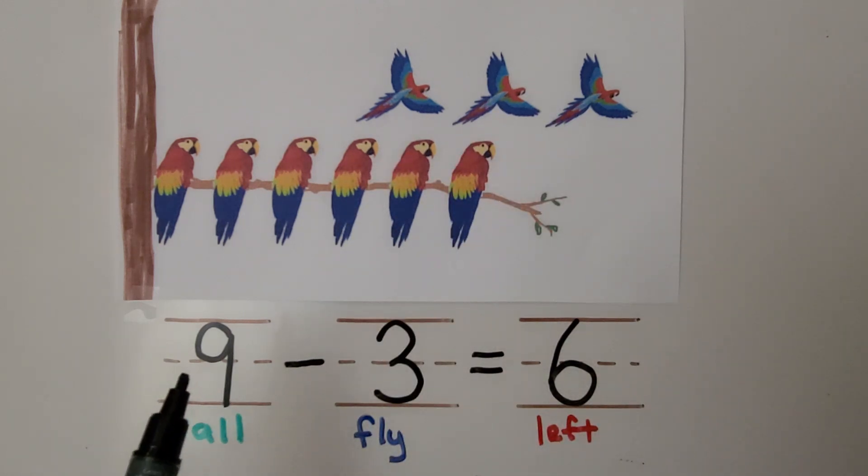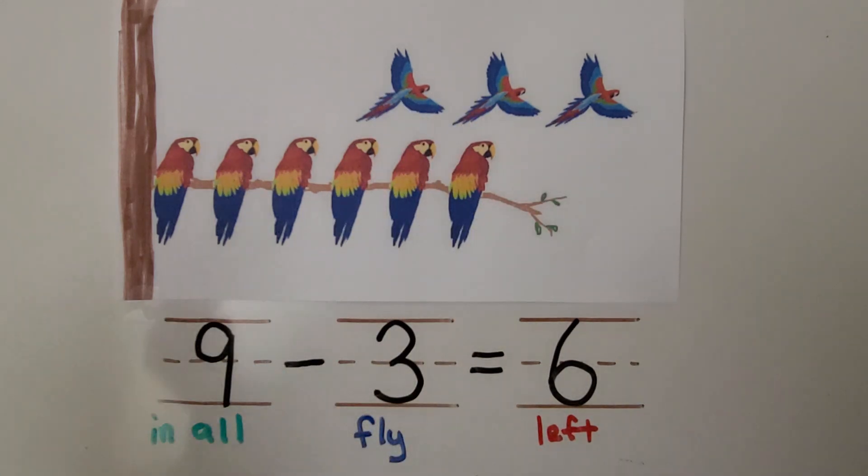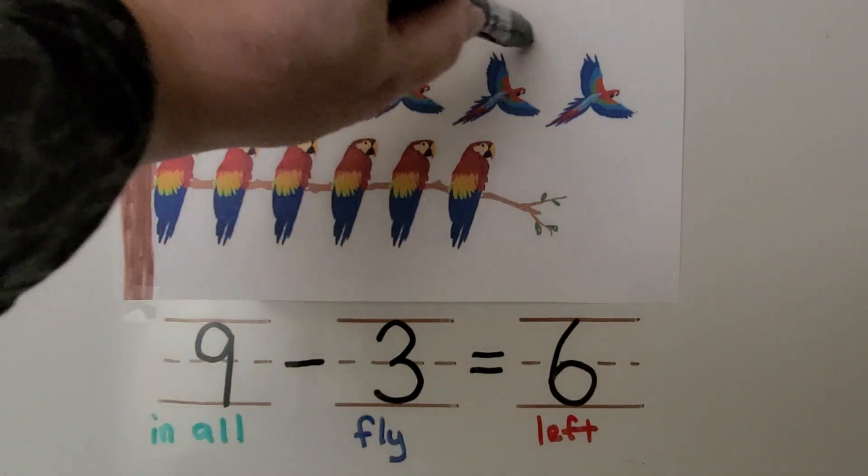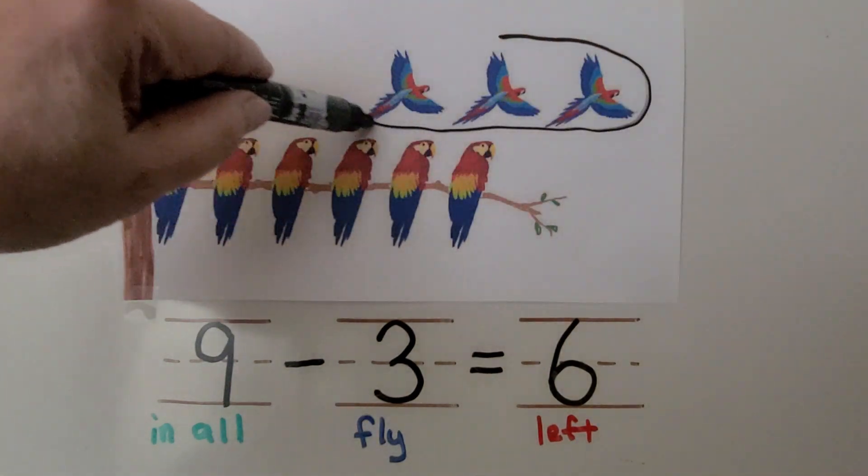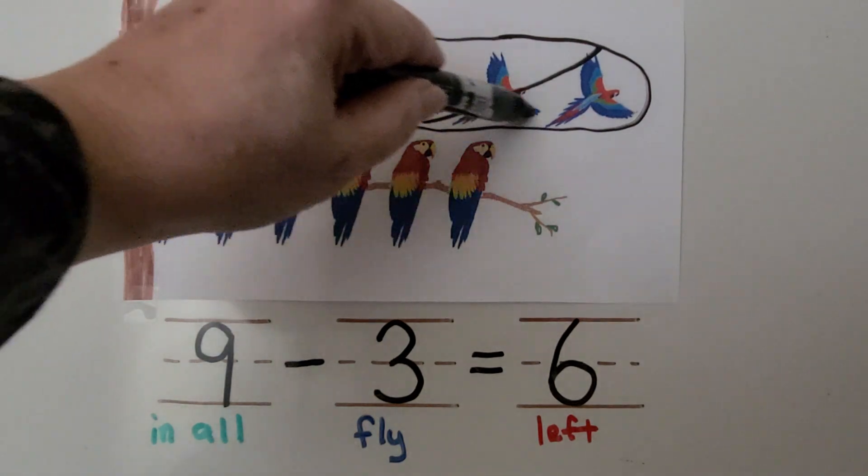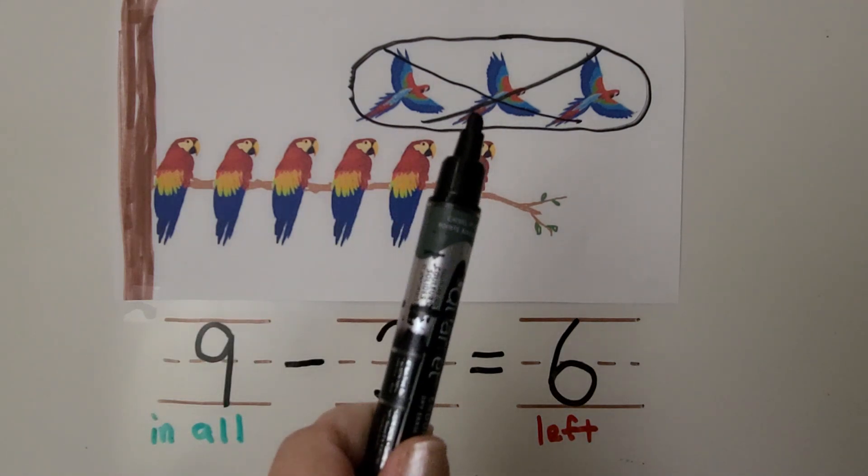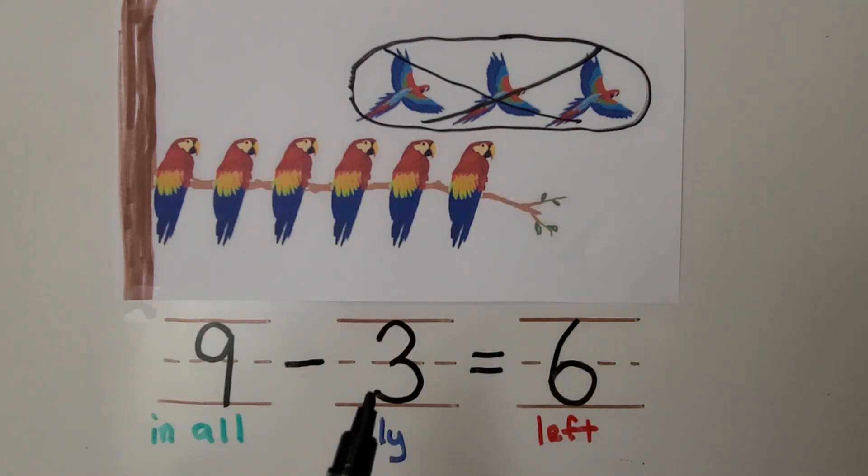There are nine birds in all in the picture. Some fly away. These are flying away. We can circle the ones that are flying away and we can cross them out because they're going away. There are 1, 2, 3 birds that fly away.